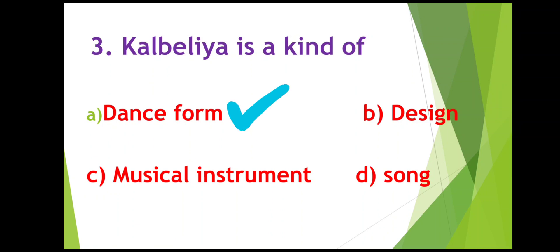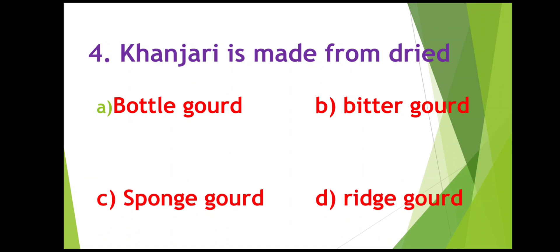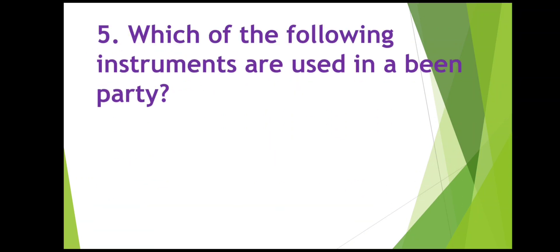Next, Khanjari is made from dried? So there is a bean party in which there are many musical instruments. Khanjari is also part of that instrument, that bean party, and it is made from dried bottle gourd, bitter gourd, sponge gourd, or ridge gourd. Bottle gourd is lauki, bitter gourd is karela, sponge gourd is tori, and ridge gourd is turai. Khanjari is made from dried bottle gourd.